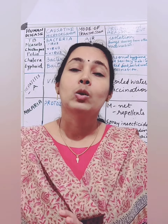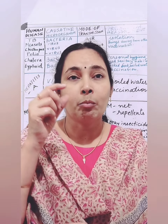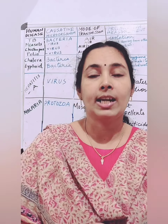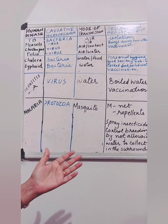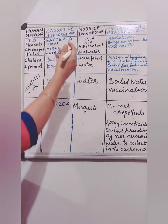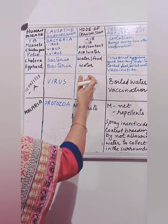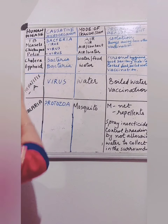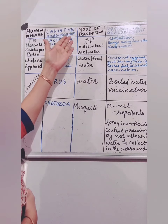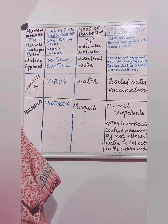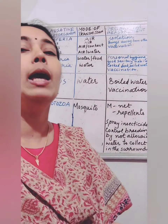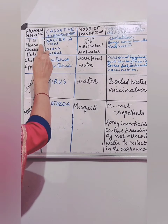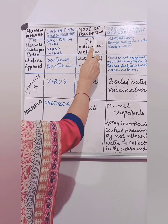Now let's study some common diseases affecting humans, their mode of transmission, and general methods of prevention from this table. The first disease is TB, or tuberculosis, which is caused by a bacterium — so tuberculosis is an example of a disease caused by bacteria. Its mode of transmission is mainly through air. Measles is caused by a virus and also spreads through air.